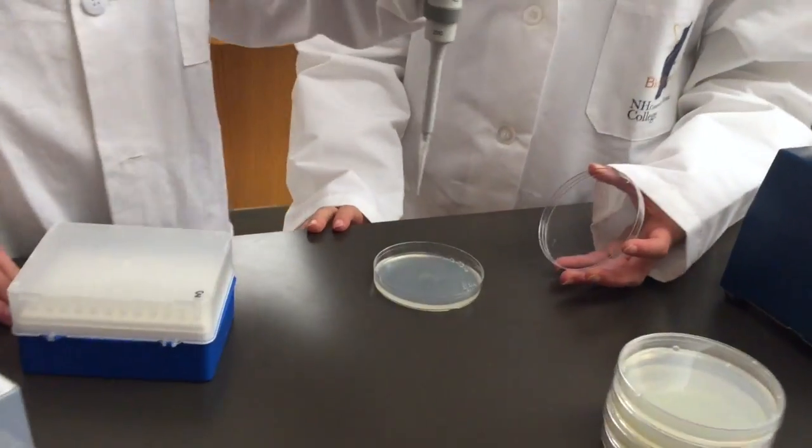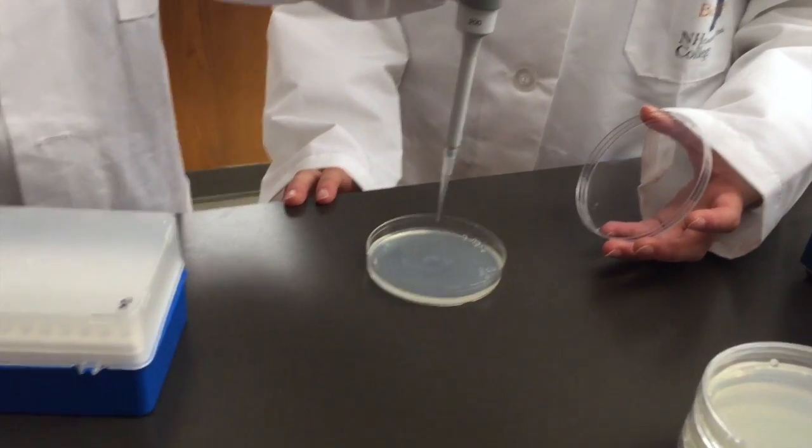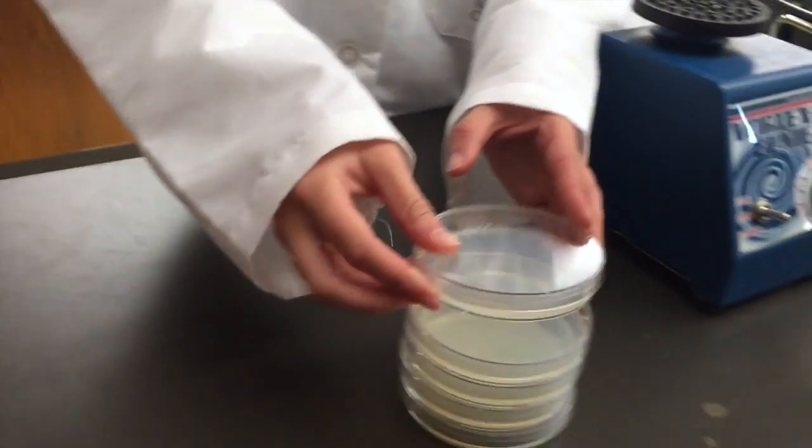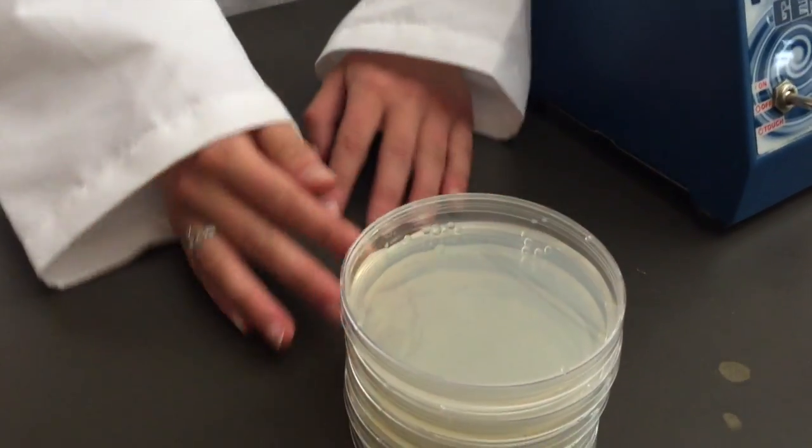Remove the plastic top of the plate and holding the pipette tip above the agar, push the control button down to the second depression to ensure that you are plating all of your culture on the plate. Eject your tip and place the top of the plate back on.